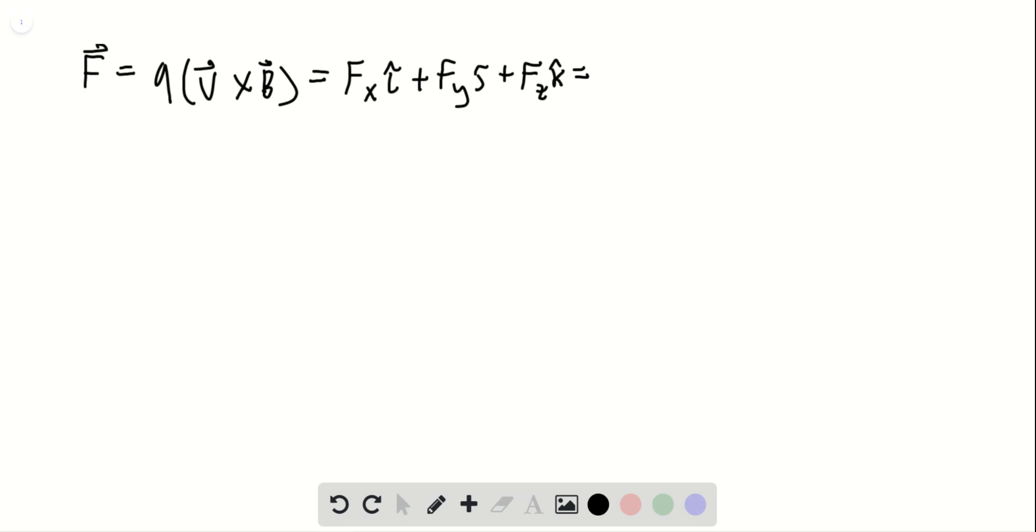And this is going to be equal to q times vy bz minus vz by i hat plus q times vz bx minus vx bz j hat, and finally plus q times vx by minus vy bx k hat.